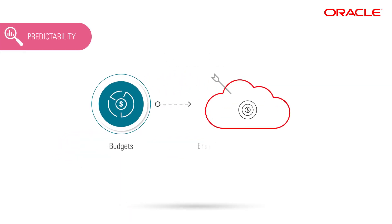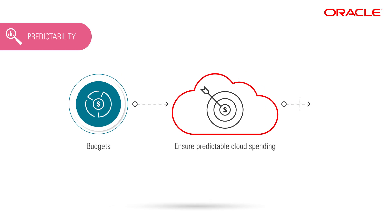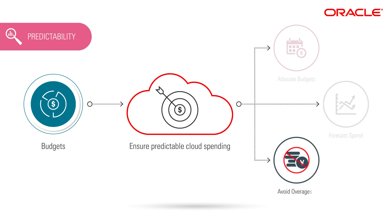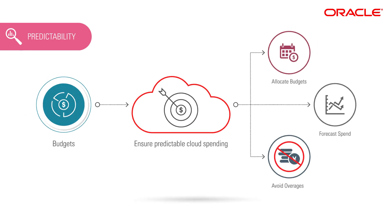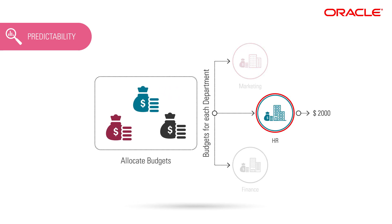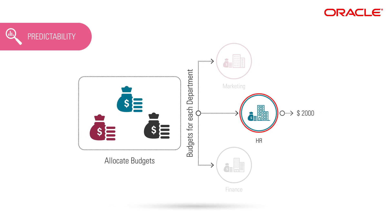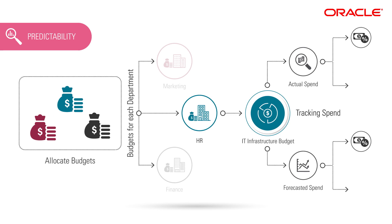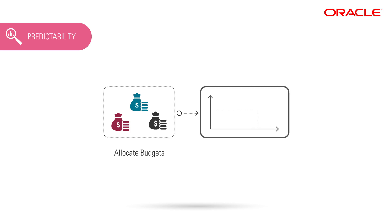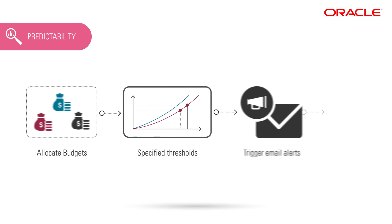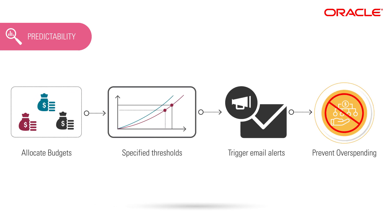Janet leverages budgets to ensure predictable cloud spending. With this tool, she can allocate budgets to different departments, forecast spending, and avoid overages. For example, Janet is able to allocate $2,000 a month to the HR department's IT infrastructure budget. She can track when the department's actual or forecasted spend hits either a percentage of the budget or a specified set amount. And if spending hits specified thresholds, the tool triggers actionable email alerts so that appropriate actions can be taken to prevent overspending.